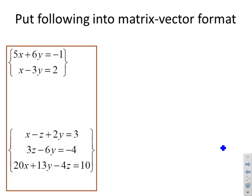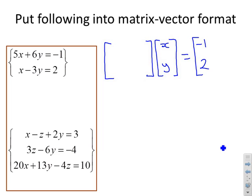Put the following into matrix vector format. I construct some blank matrices of the right size. My variables are x and y, so I've put them in the right-hand vector. My right-hand side is minus 1 and 2. Then I reproduce the top equation 5x plus 6y: I put 5 here and 6 here and the top row will give me 5x plus 6y.